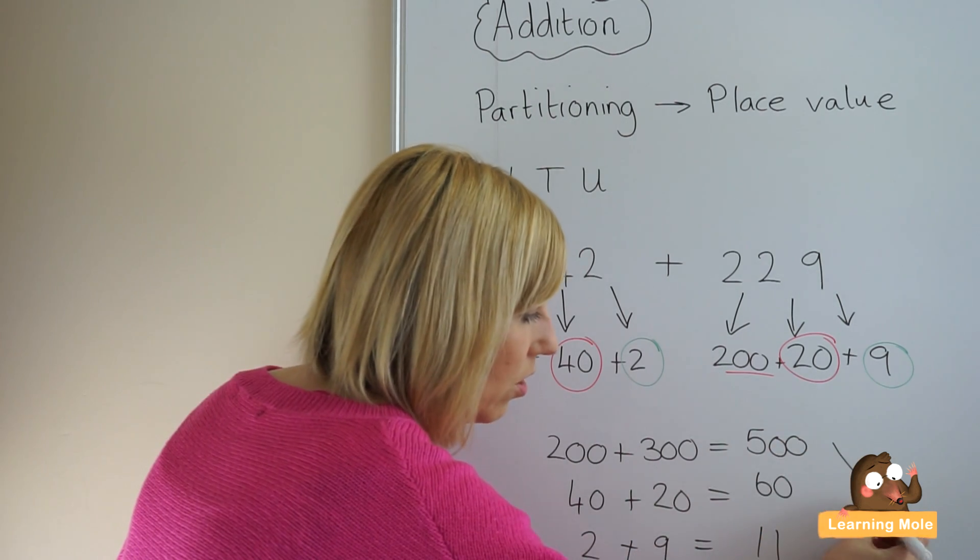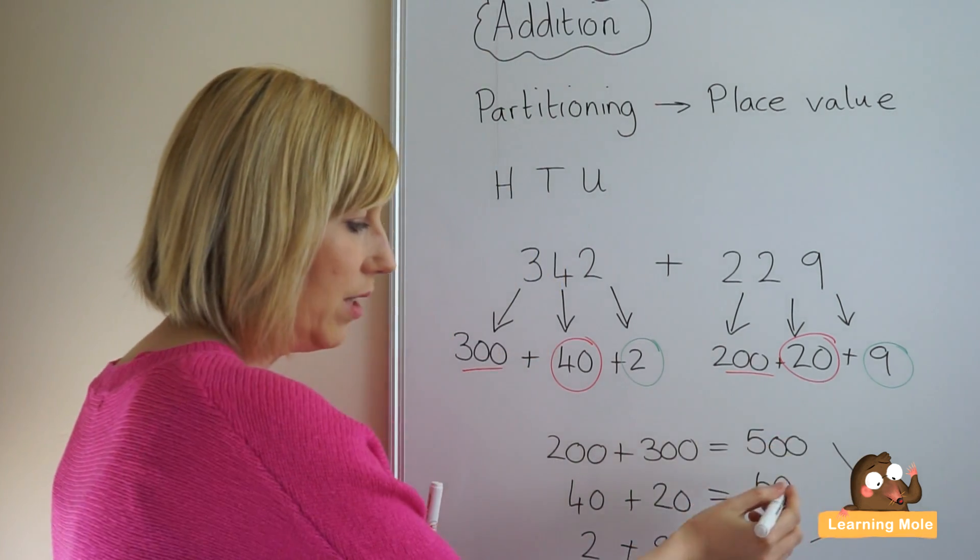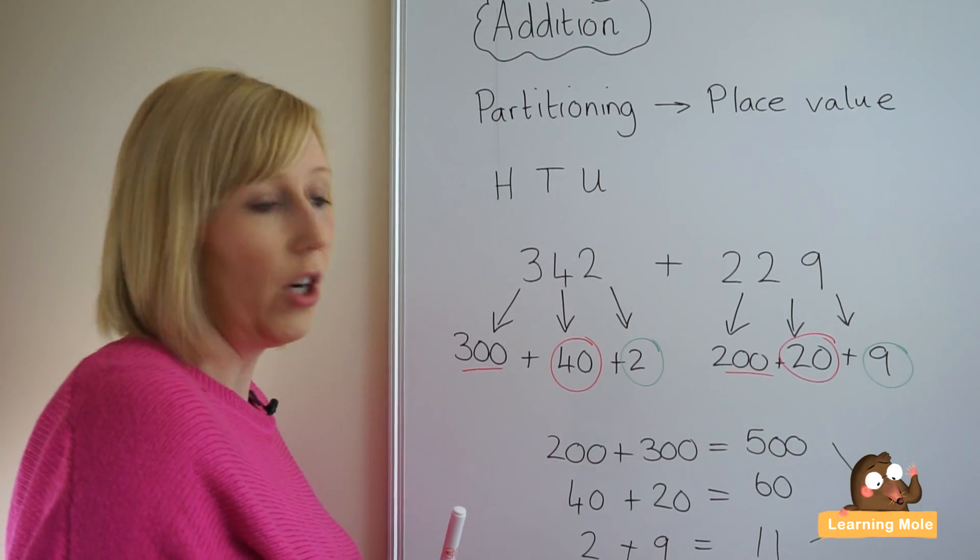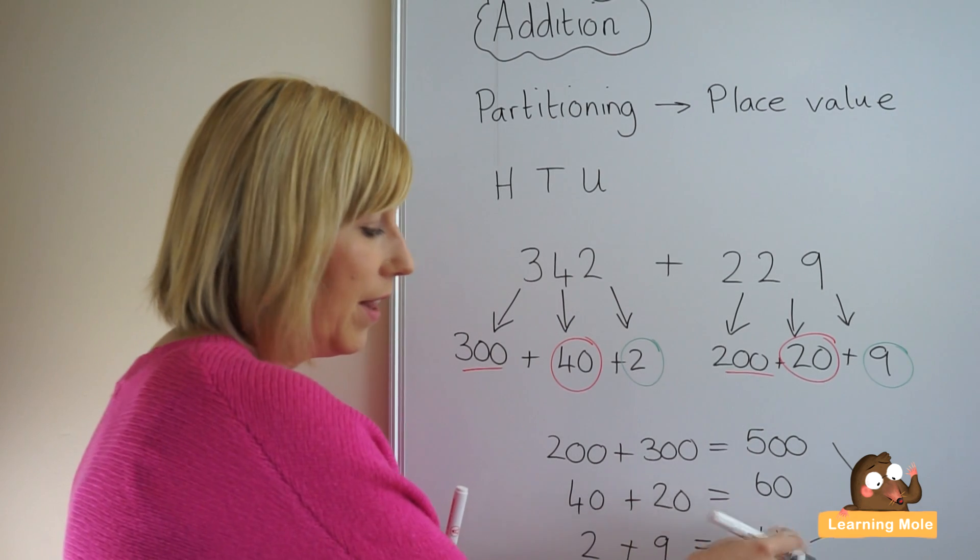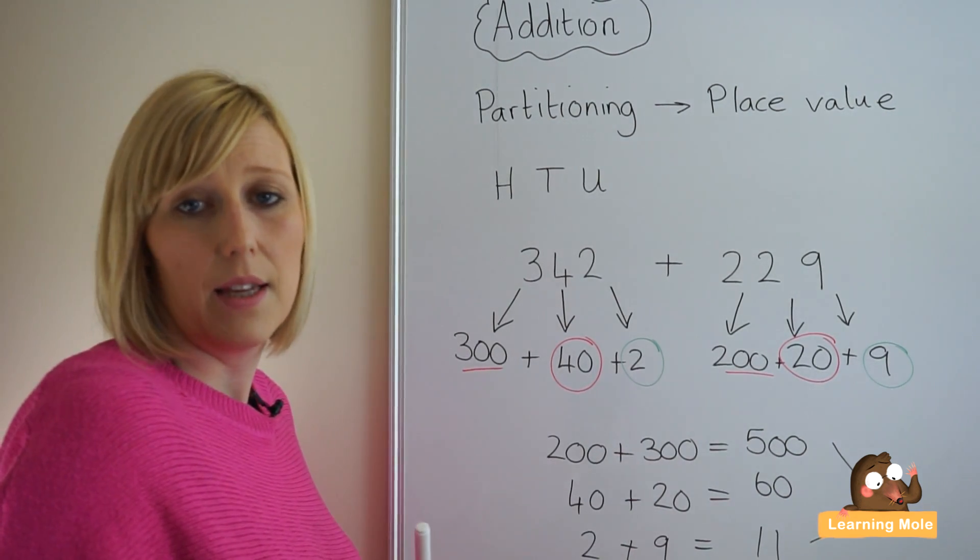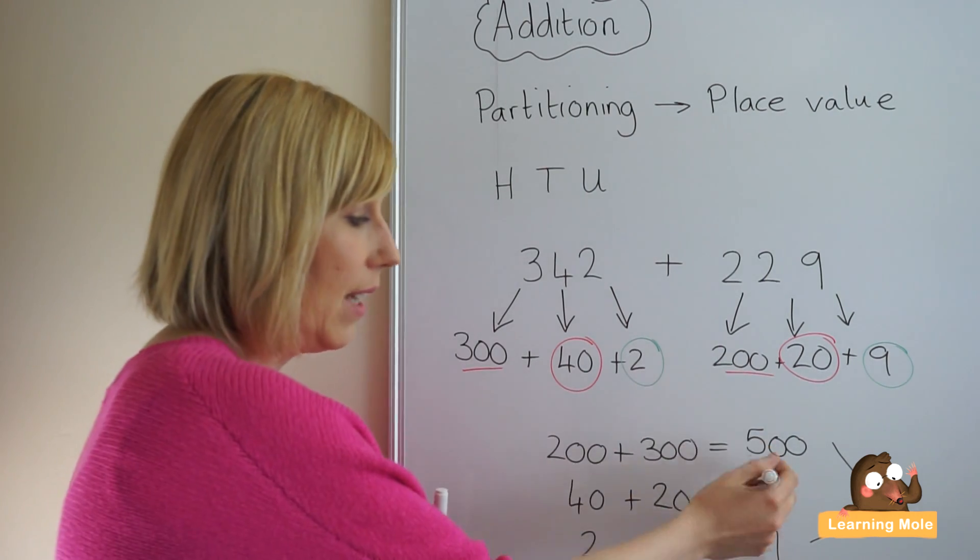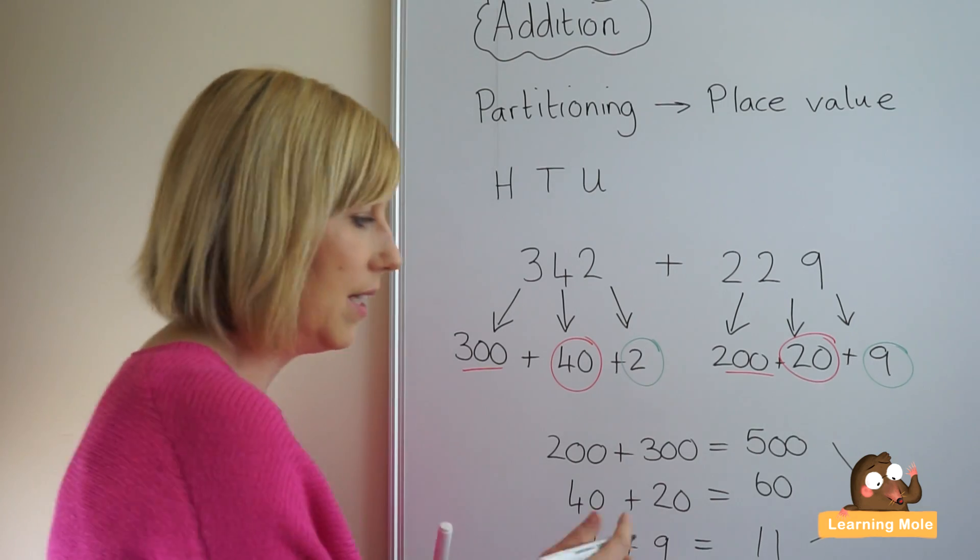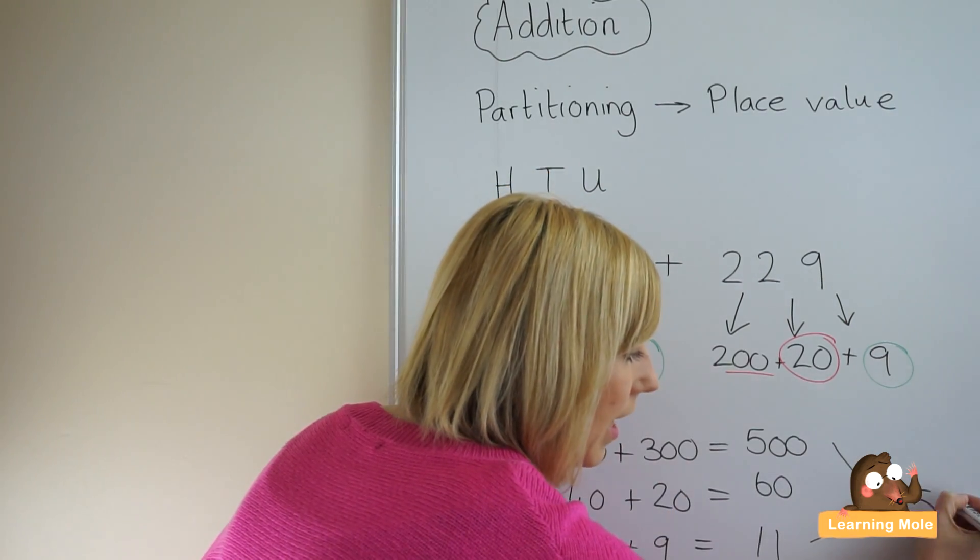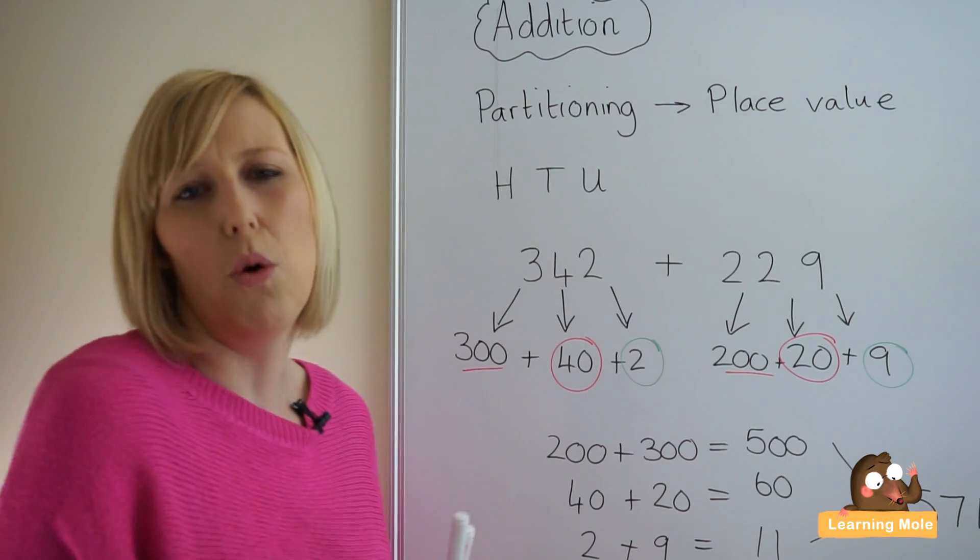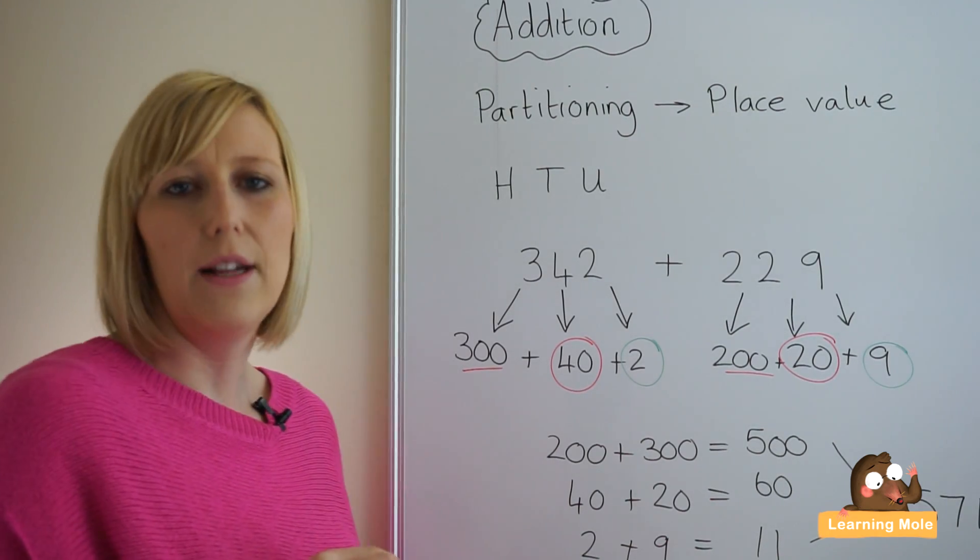And then we are going to recombine 500 plus 60 plus 11. At this point, I would encourage the child if this number, their units number is over the tens, I would add them together first and then add on to their hundreds. So 60 plus 11 is 71, 571. So again, you can see the actual thought process that you want your child to go through.